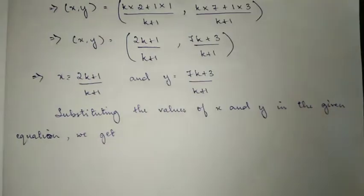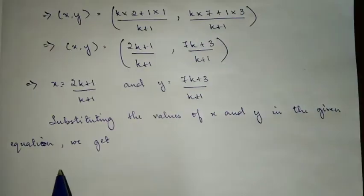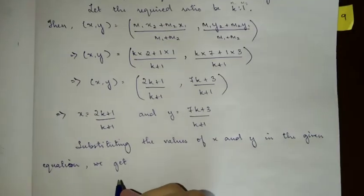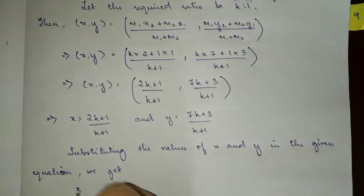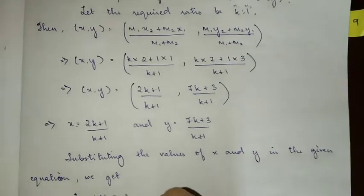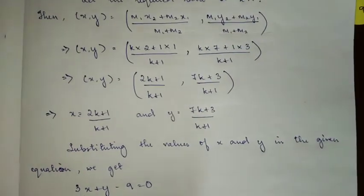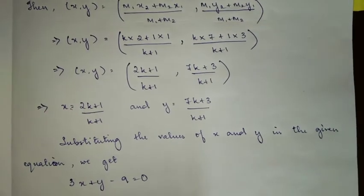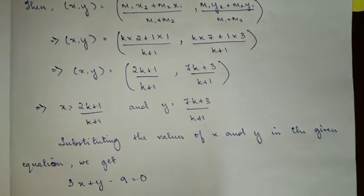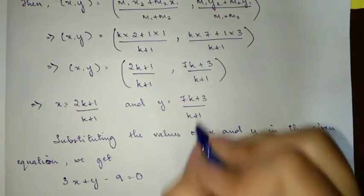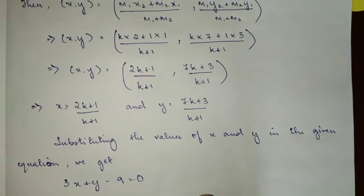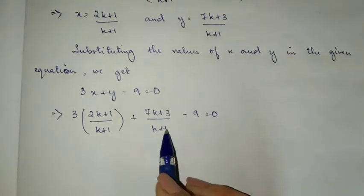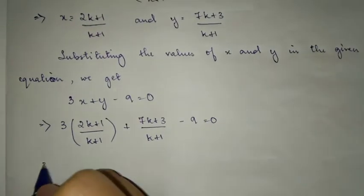Now when we substitute it, we'll get: first of all, write down the given equation. The equation is 3x + y - 9 = 0. Substituting x and y, we get: 3 times (2k + 1)/(k + 1) plus (7k + 3)/(k + 1) minus 9.